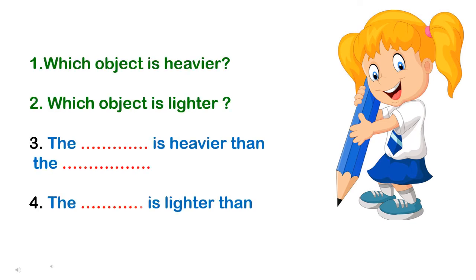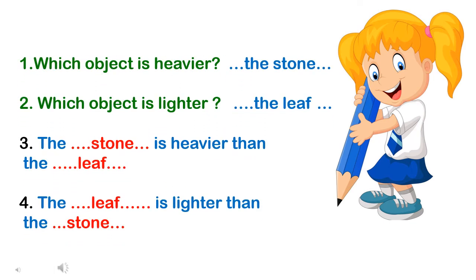Can you all give the answers for these questions? Let's move to the answers. Which object is heavier? The stone. Which object is lighter? The leaf. The stone is heavier than the leaf. The leaf is lighter than the stone.